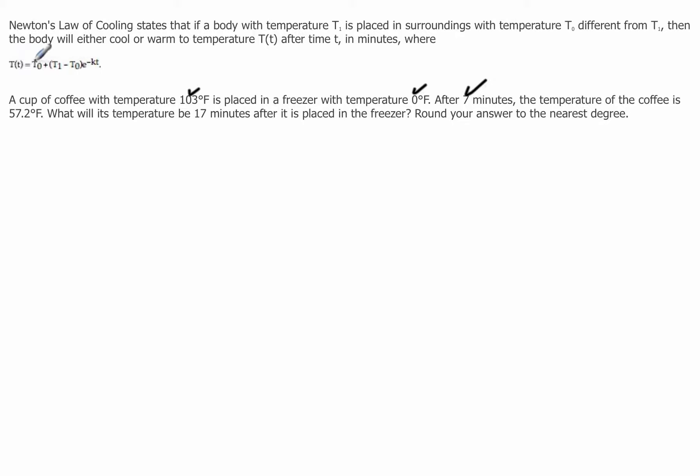So it looks like I've got two temperatures, only this one and this one, and I have a time. Oh, and then they say the temperature of the coffee is 57.2°F. That's a third temperature, so it's probably got to be this one here.